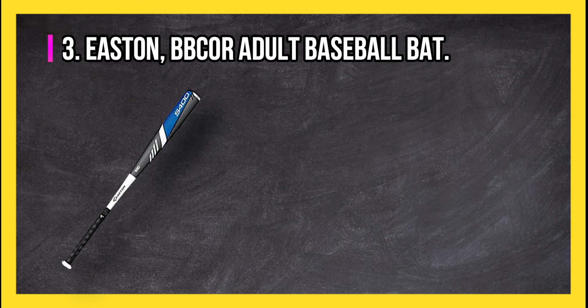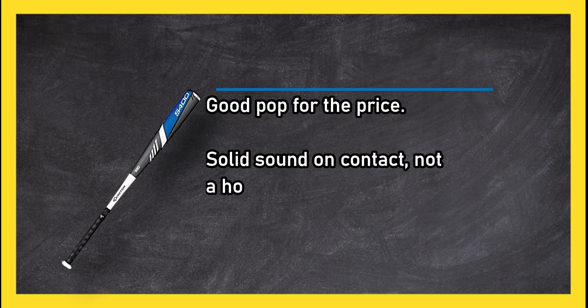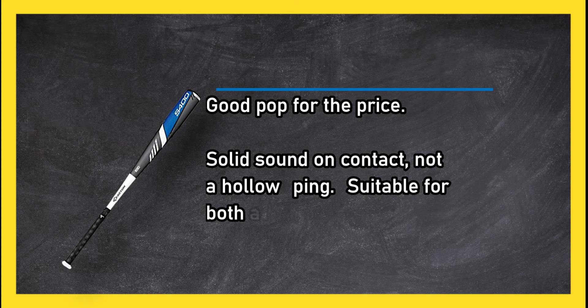At number three: Easton BB Core adult baseball bat. Good pop for the price, solid sound on contact, not a hollow ping.